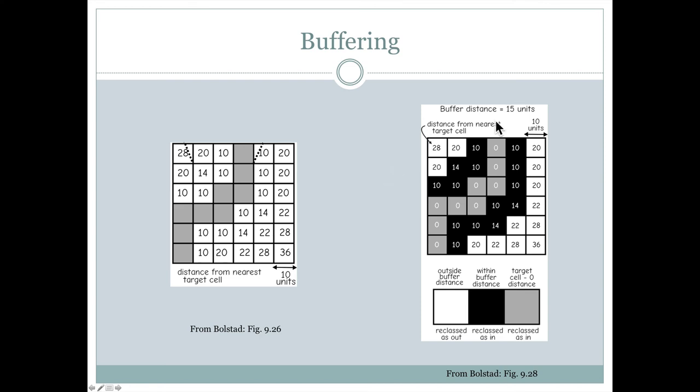In this example, the buffer distance is equal to 15 units. So this one, this one and this one would be included. But all these 20s, all these numbers in the 20s would not be included. So it has to be less than 15 in order to be colored black as part of the buffer. And this may or may not include the original area that was defined by these grid cells.